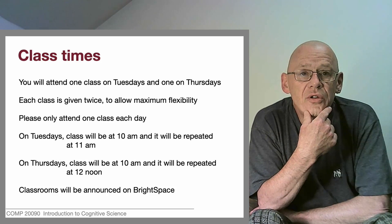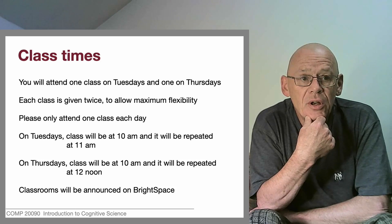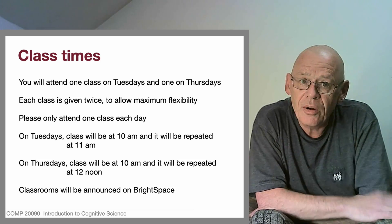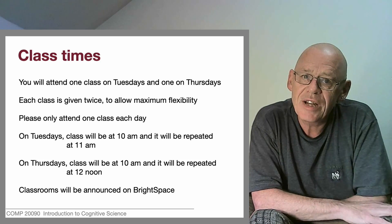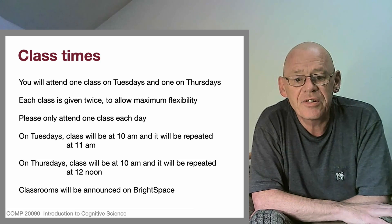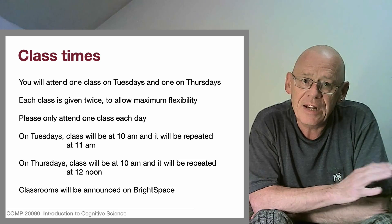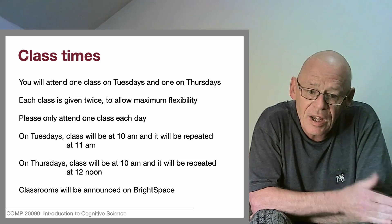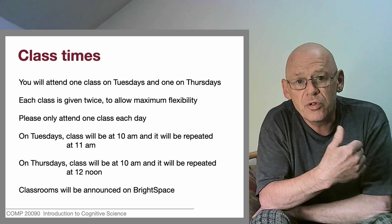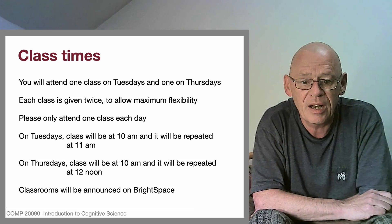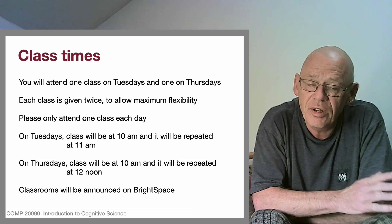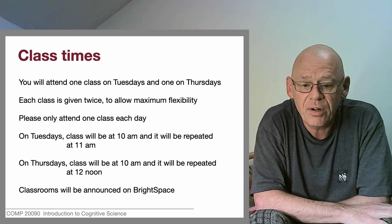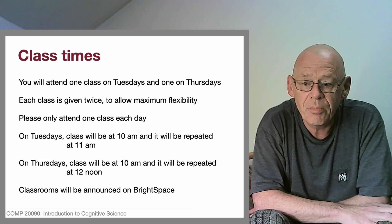Because this module is taught to a wide variety of students across campus, we try to make it fit everyone's timetable. There are two one-hour lectures each week, but each lecture is repeated. On Tuesdays there's a class at 10 o'clock and the same class is given again at 11. On Thursdays there's a class at 10 o'clock and the same class at 12. So you go to one of the Tuesday classes and one of the Thursday classes — 10 or 11 on Tuesdays, 10 or 12 on Thursdays. The actual classrooms will be posted on Brightspace.